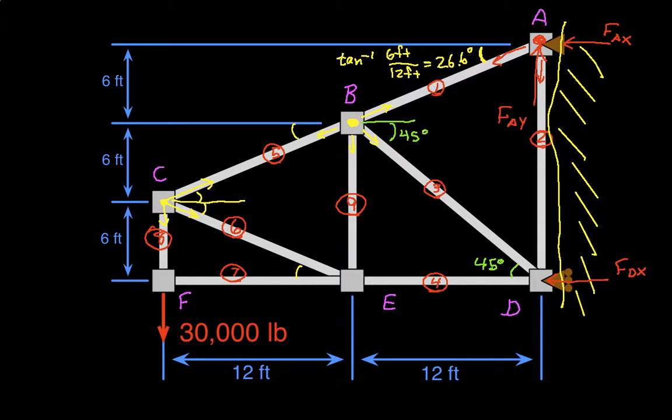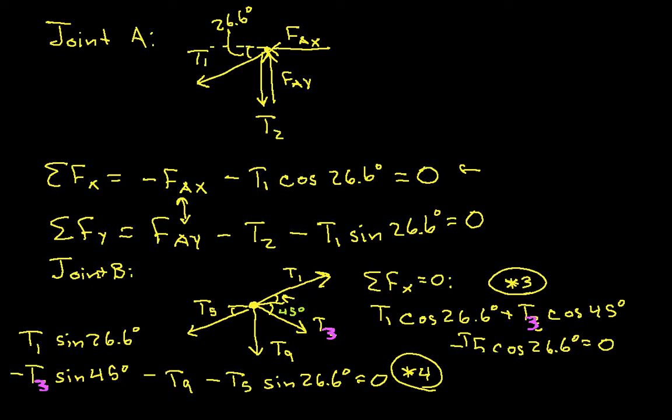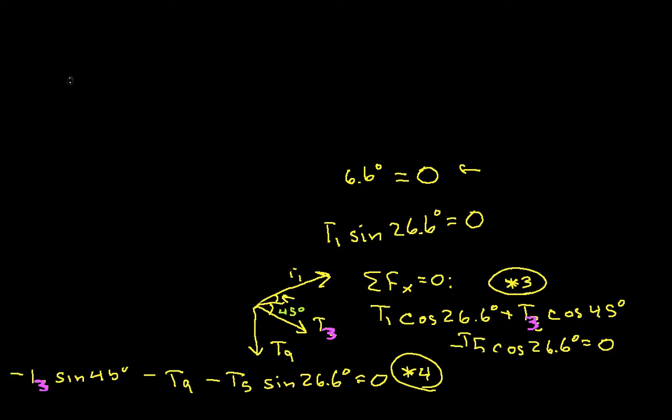Okay, so let's create the free body diagram for the pin at that joint. So we have joint C, and the free body diagram looks like this.